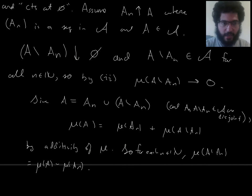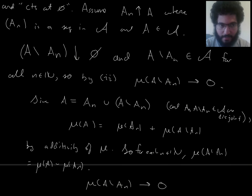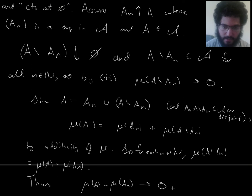So, actually, if you look at this convergence statement here, it's about μ of A minus μ of A_n. So, thus, this is really about μ of A minus μ of A_n. And that's the same as saying μ of A_n converges to μ of A.